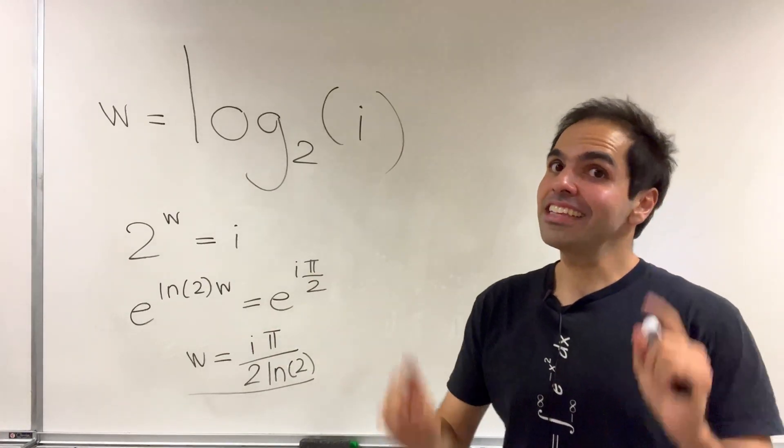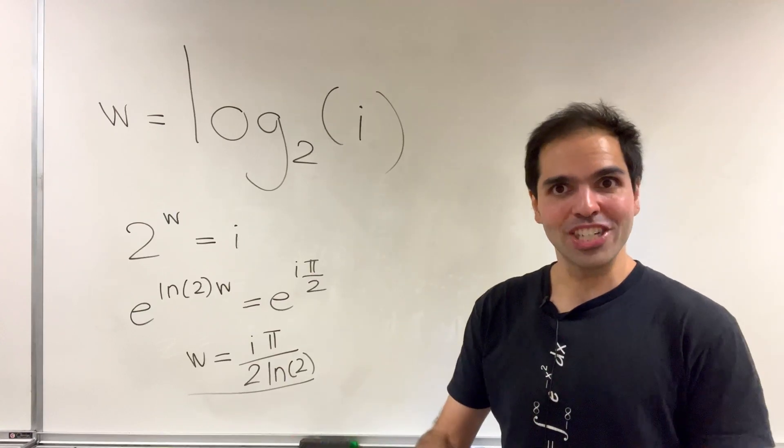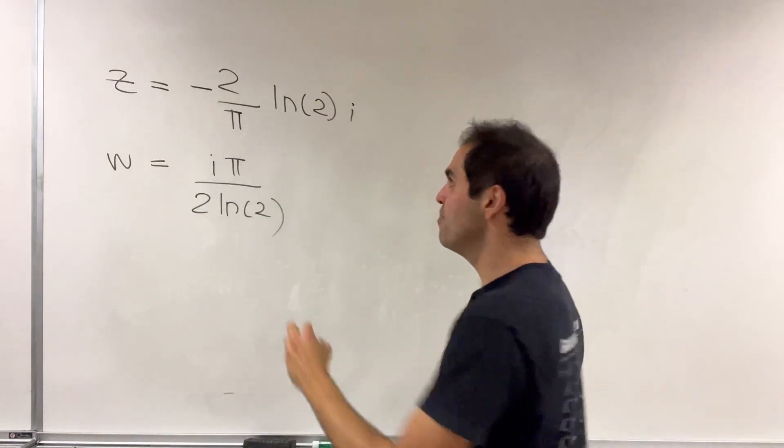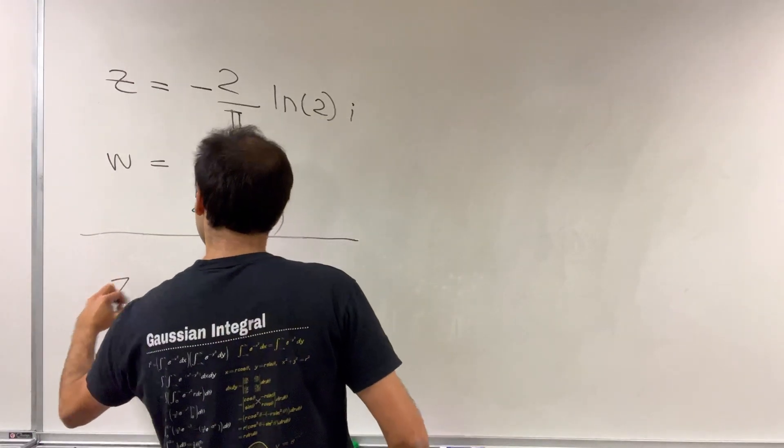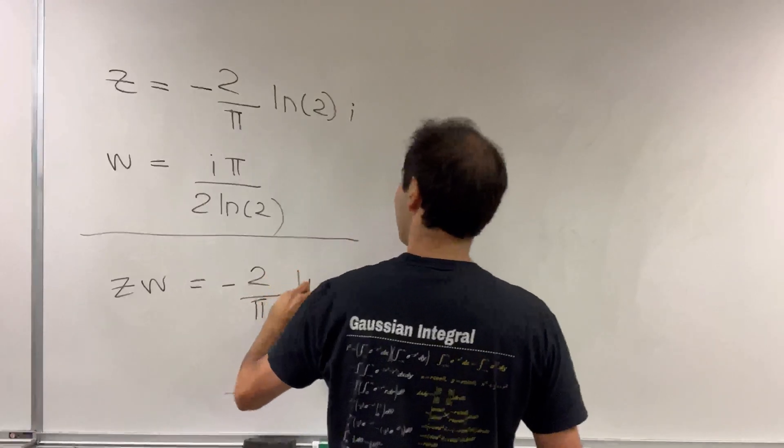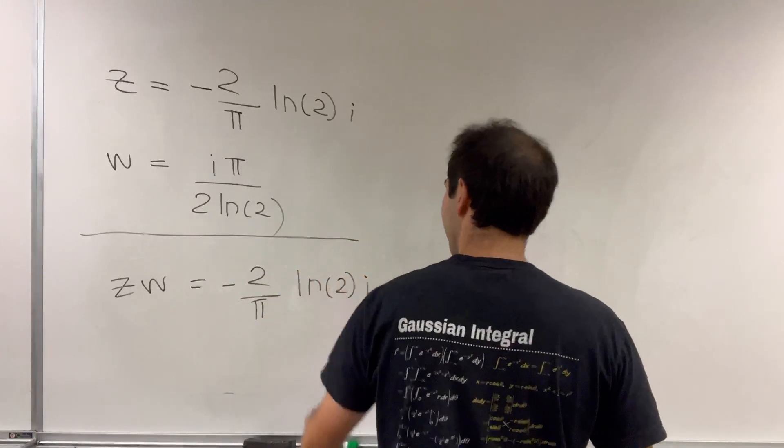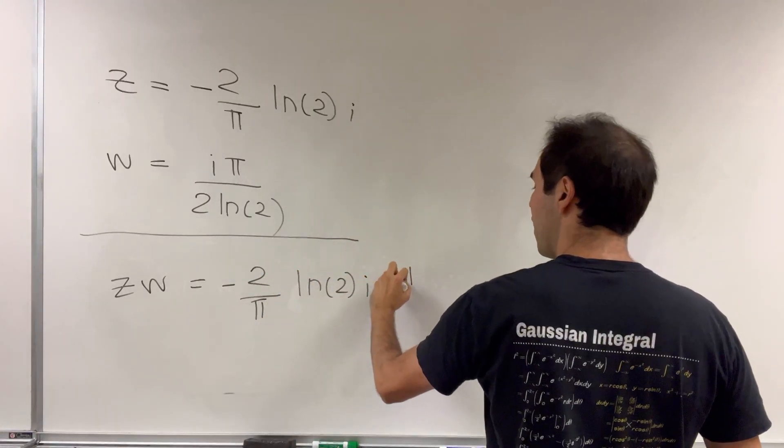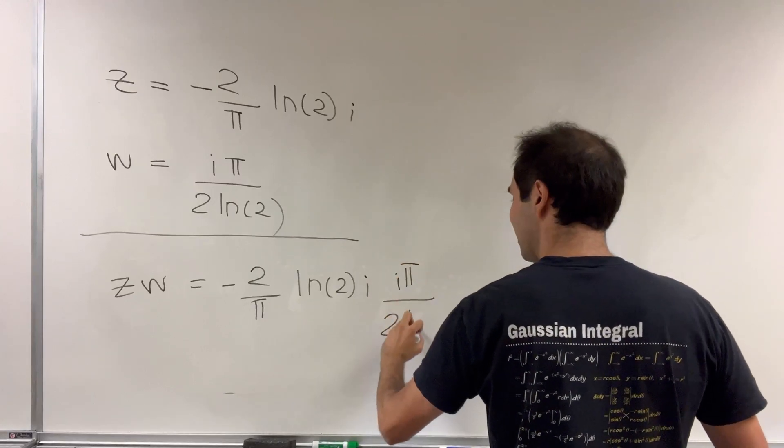That said, there's a very nice relationship between the two. How about we multiply the two? So z w, that's minus 2 over pi ln of 2i times i pi over 2 ln of 2.